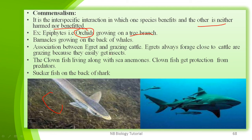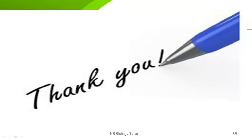The cattle egret and grazing cattle association is a classic commensalism example — orchids forage close to grazing cattle to easily get insects. The clownfish lives alongside sea anemones and gets protection from predators, while the anemone is unaffected. Similarly, the sucker fish is always present on the back of sharks. Thank you for watching — stay tuned to my channel.